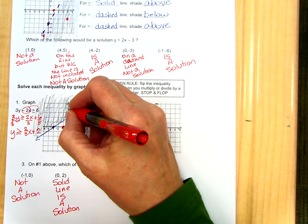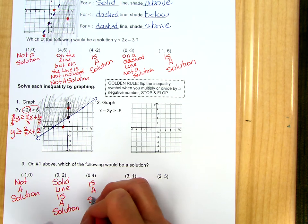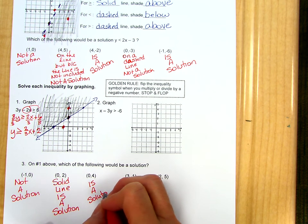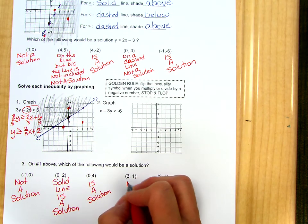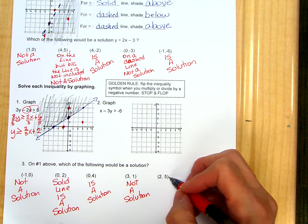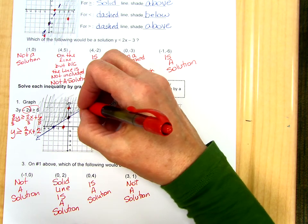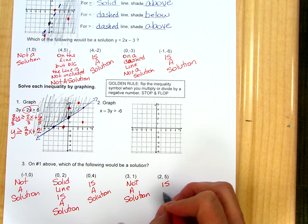Over 0, up 4 is a solution because it is in the shaded area. Over 3 and up 1, not a solution because it is not in the shaded area. And then finally, 2, 5, over 2 and up 5. Again, that is in the shaded area, so it is a solution.